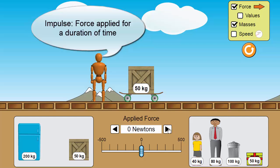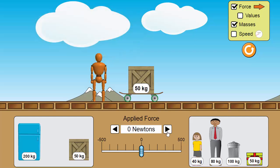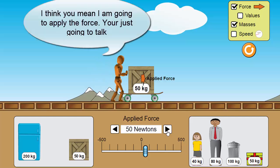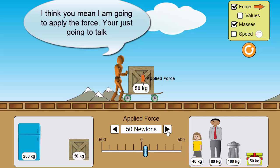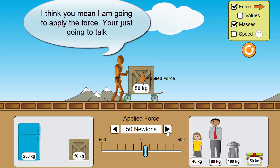Now, I'm going to apply an impulse to this 50 kilogram mass that has zero force. I'm going to do it for five seconds. One, two, three, four, five.